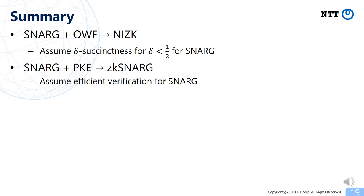This is the summary. We construct NIZK from SNARK and one-way function. As a simple corollary of this result, we also obtain zero-knowledge SNARK from SNARK and public key encryption. This is the end of my talk. Thank you for your attention.